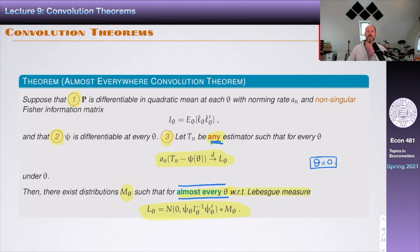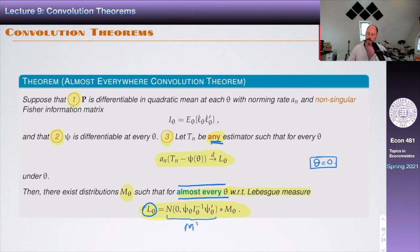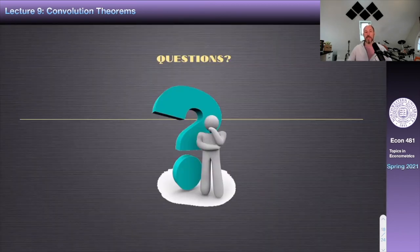Hajek's theorem holds for every single θ but only for regular estimators. Le Cam's theorem applies to any estimator but only for a measure-one subset of θ values. Together, the two convolution theorems define the scope of the problem: either you require estimators to behave reasonably, or you accept that improvements over MLE are only possible on a set of measure zero.